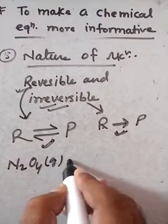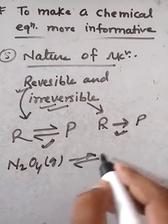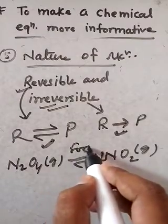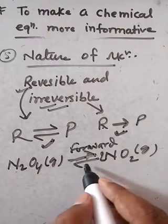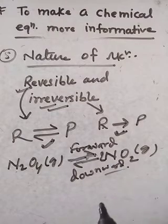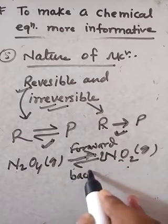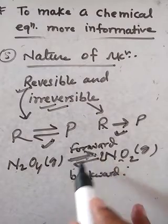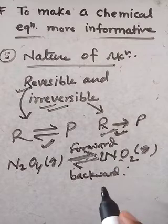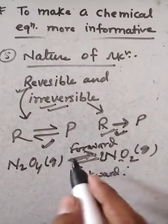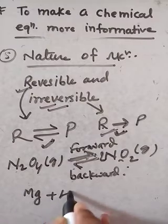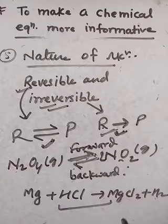For example, N2O4 in gaseous state and NO2 in gaseous state represent a reversible reaction. The forward half-arrow represents the forward reaction and the backward half-arrow represents the backward reaction. Another example: Mg + HCl → MgCl2 + H2 — this uses a single arrow, so it is an irreversible reaction.